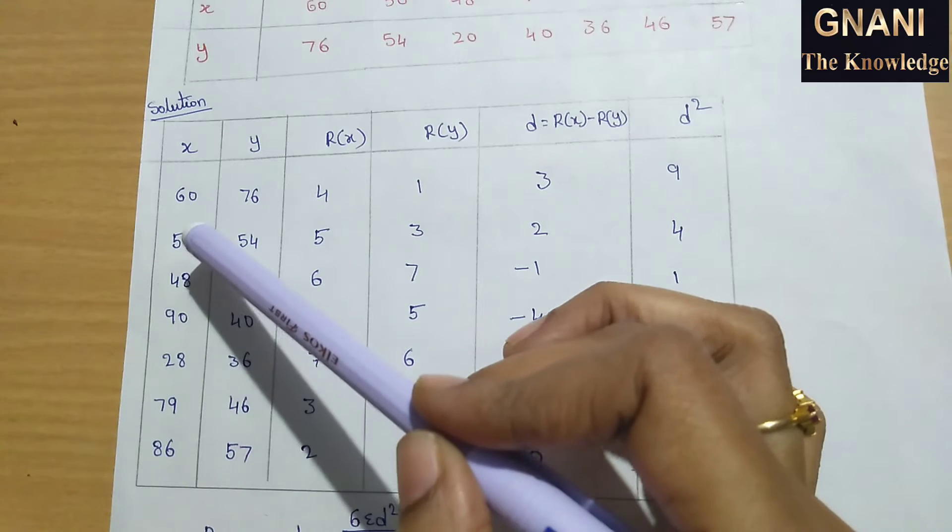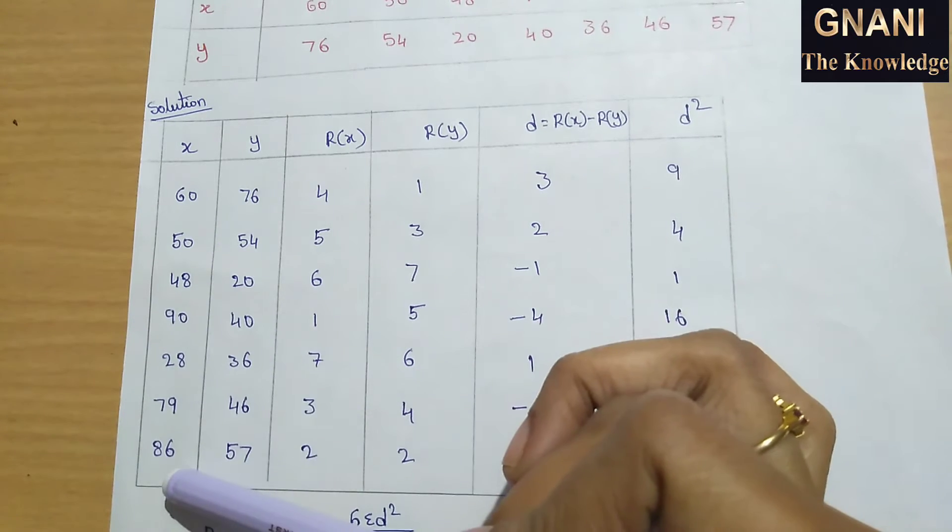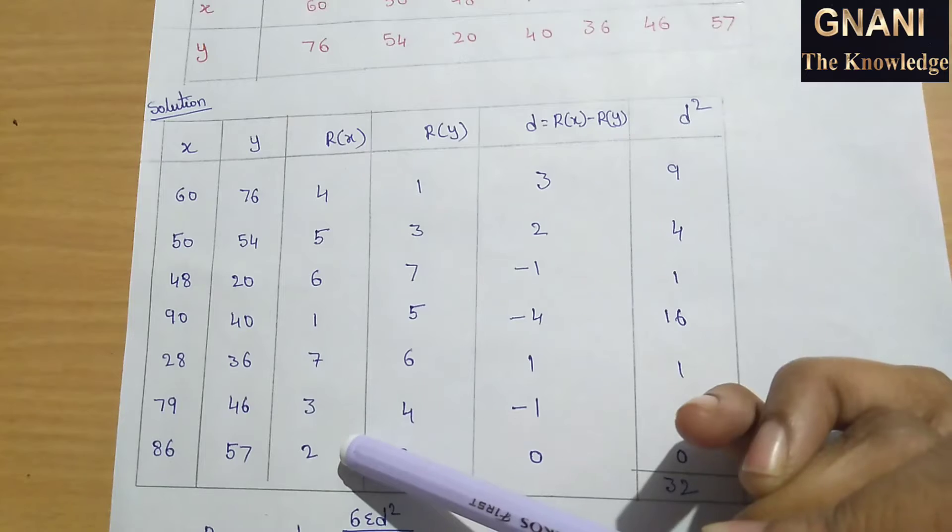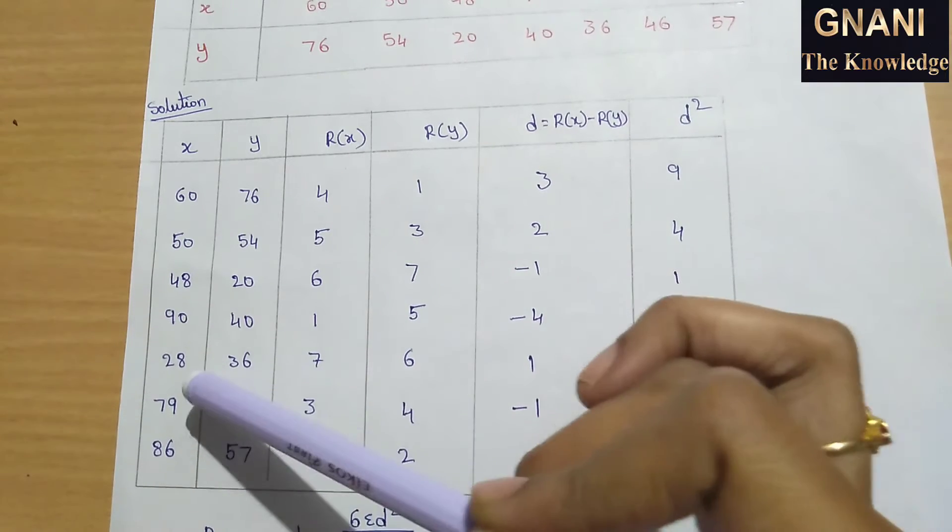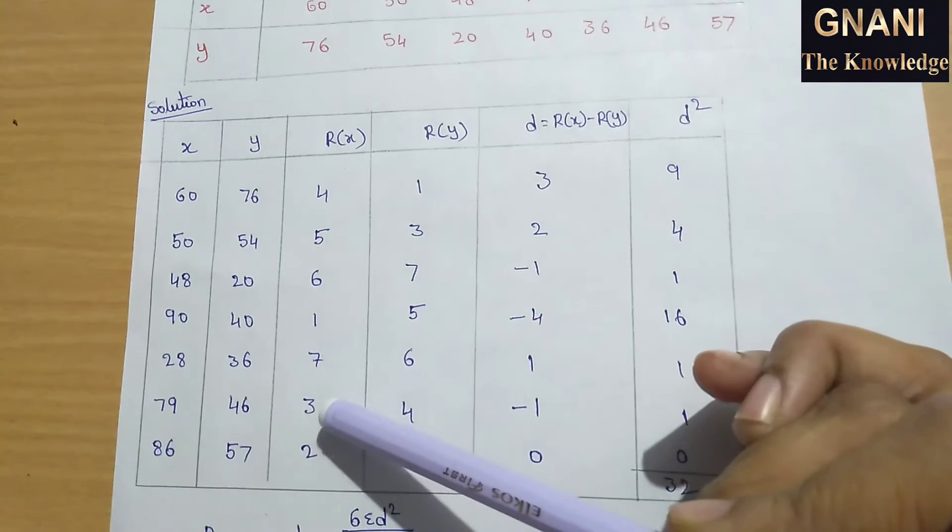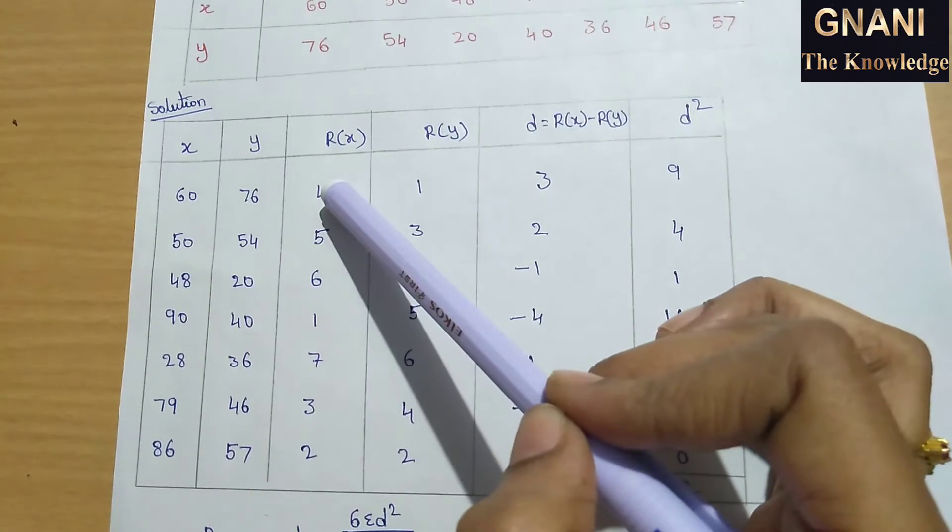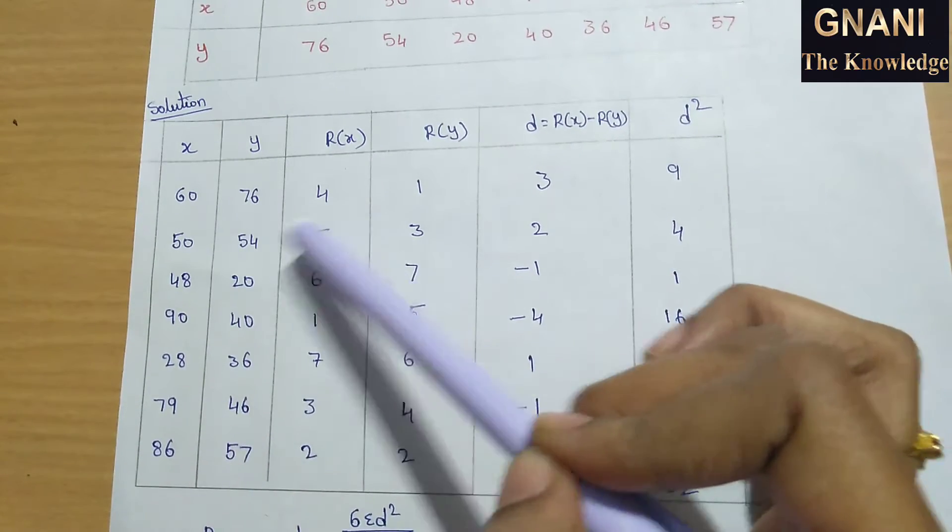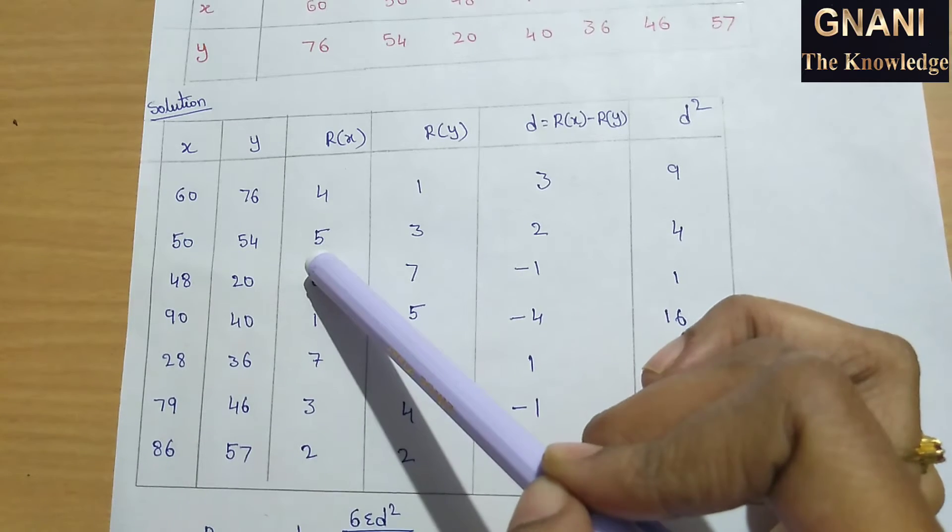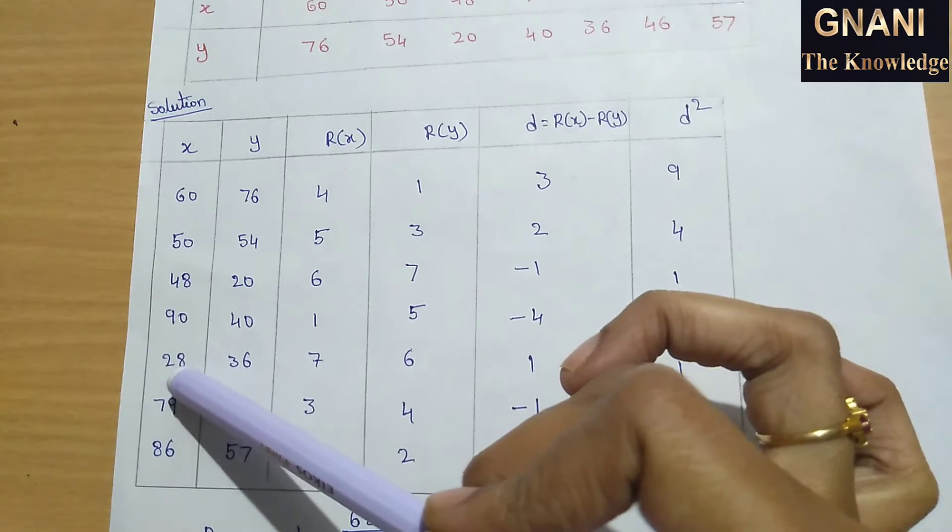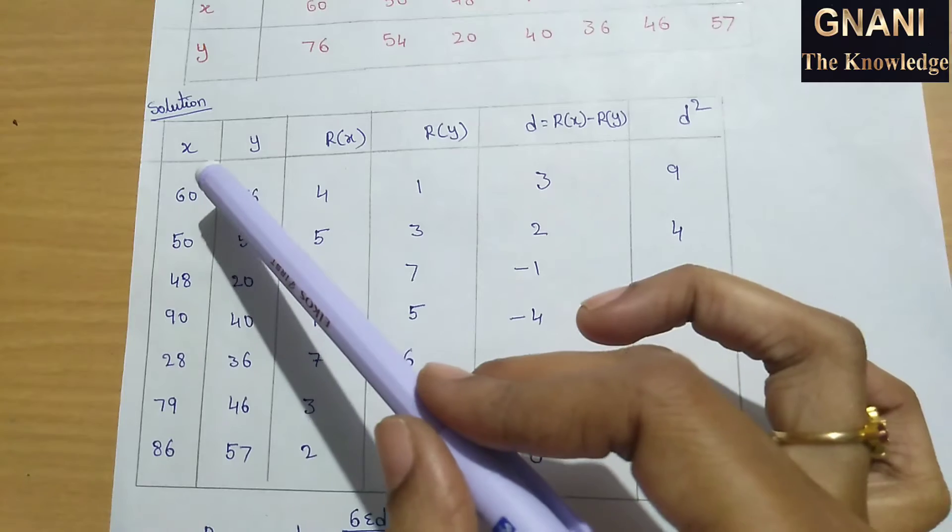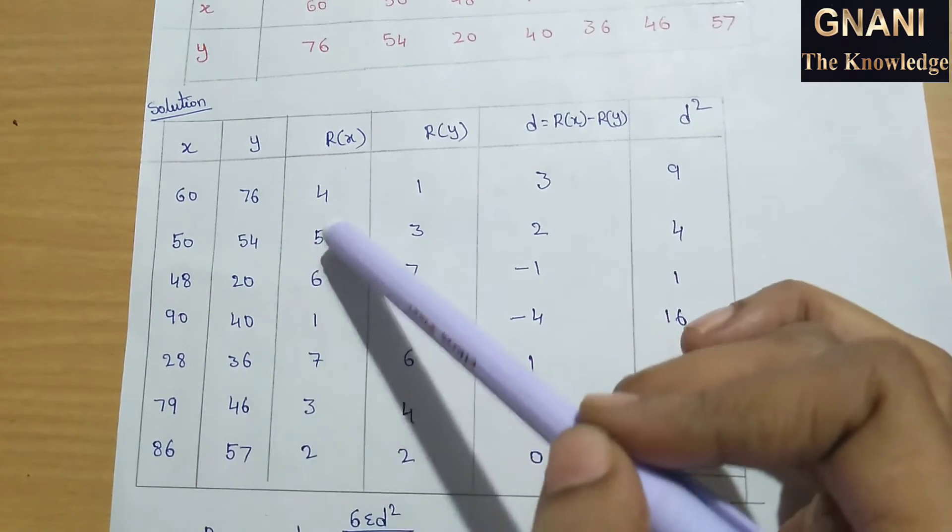After 90, the next maximum number is 86, which gets second rank. Next maximum number 79 gets third rank. Then 60 gets fourth rank, 50 gets fifth rank, 48 gets sixth rank. The least number 28 gets seventh rank. This is how we calculate ranks for x series, assigning the highest number first rank.